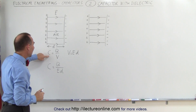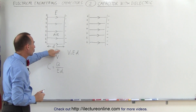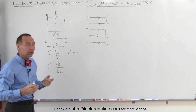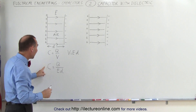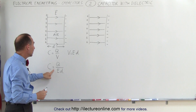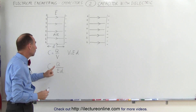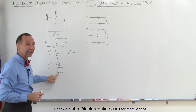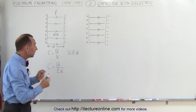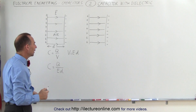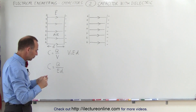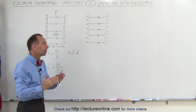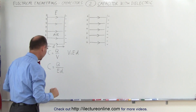And since the capacitance is equal to the charge divided by the voltage, we can also say that capacitance is equal to the charge divided by the strength of the field and divided by the distance between the plates. So what happens when we place a dielectric between the plates?